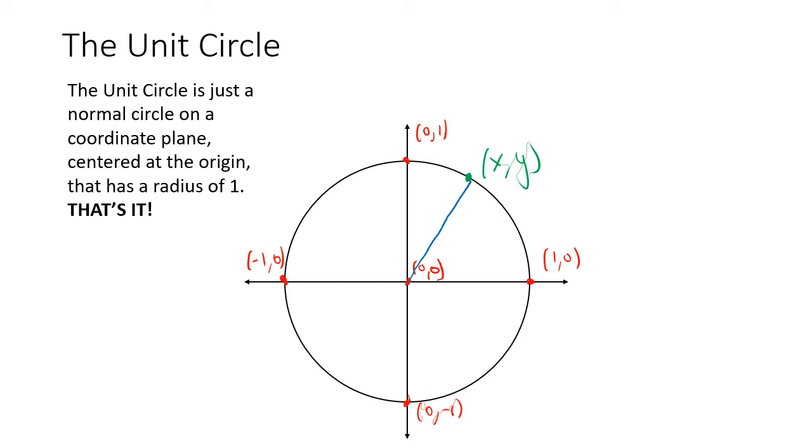Remember, we said if we draw an angle in standard position, what it means is that blue line there - that's the starting side, the initial side. And then over here, this is the terminal side. And this is the angle theta. That's what the unit circle is - we can draw angles within the unit circle.